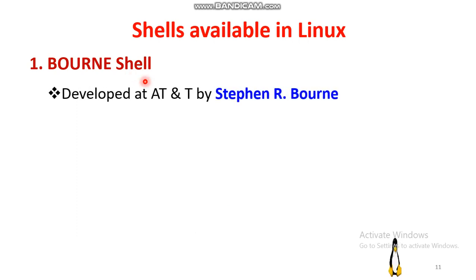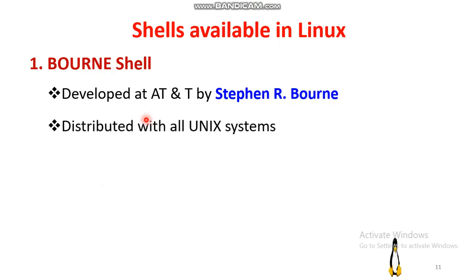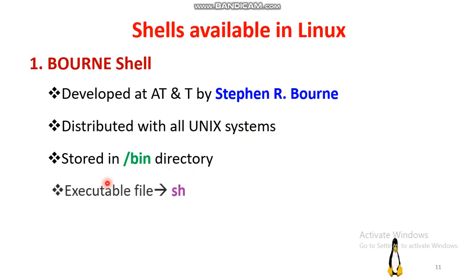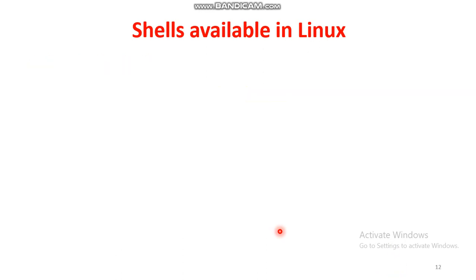The Bourne shell was developed at AT&T Laboratories by Stephen Bourne, and in his name the shell is called the Bourne shell. It is distributed with all Unix systems, stored in the /bin directory, with the executable file notation 'sh'. It is the most widely used shell.